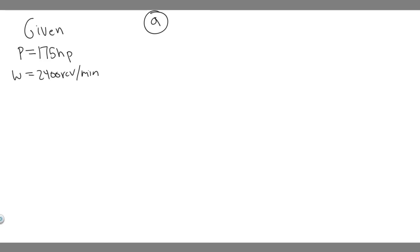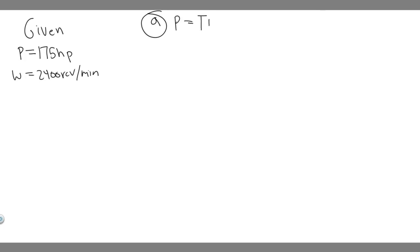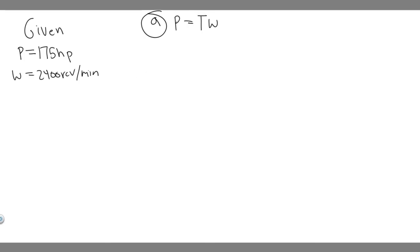So we need to relate torque, angular velocity, and power. There's a formula you can use to relate them: power is equal to torque times angular velocity. We're trying to solve for torque, we have angular velocity, and we have the power. So if we want to solve for torque, just divide by omega — torque is equal to power over the angular velocity.